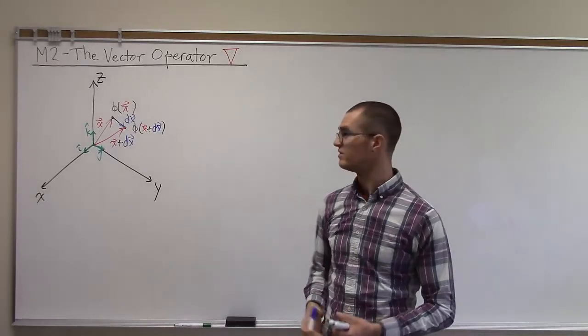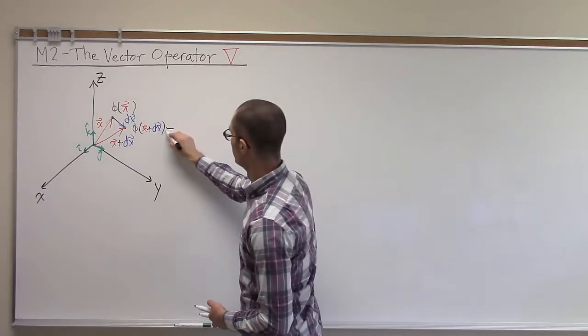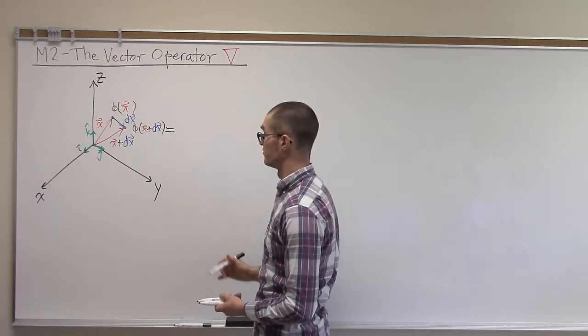Of course, the value at that point is going to be whatever value it had before, phi of x, plus the change in phi as it went from one point to another.